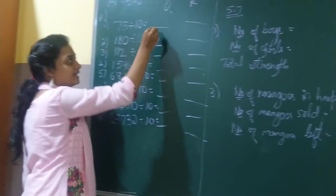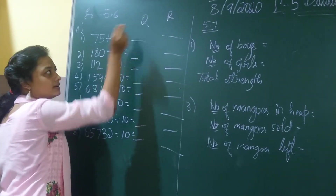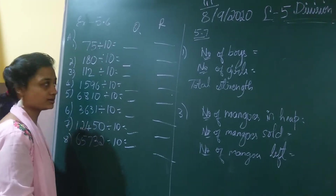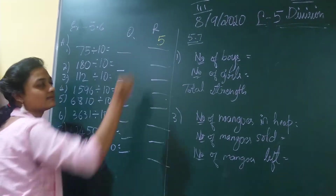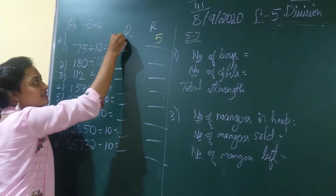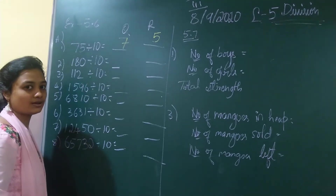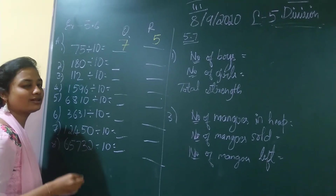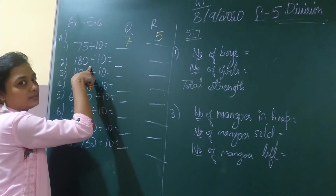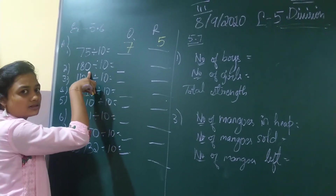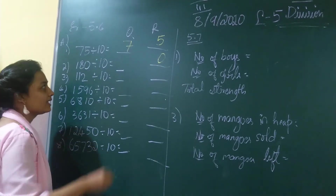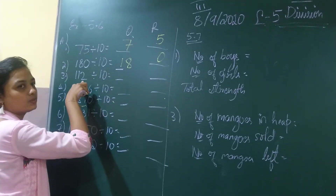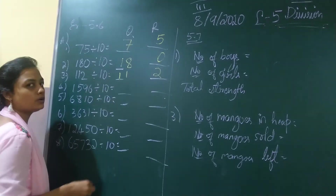So 75 divided by 10: the last number 5 will be my remainder, and leftover number 7 will be my quotient. Next, 180 divided by 10: last number 0 is my remainder, and 18 is my quotient. Similarly, 112 divided by 10: 2 is my remainder and 11 is my quotient.